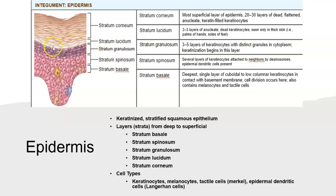The stratum granulosum often appears as the darkest-staining layer under a microscope because the granules in the cytoplasm take up a lot of stain. The next layer is the stratum lucidum — lucid means clear — it doesn't take up stain well and is only present in thick skin, found on the palms of your hands and soles of your feet. The most superficial layer has 20 to 30 layers of dead, flat, keratin-filled keratinocytes that are constantly sloughing off — around 30 to 60 thousand cells every hour, approximately nine pounds of skin per year, about five billion cells a day.